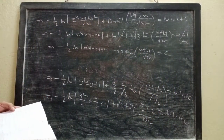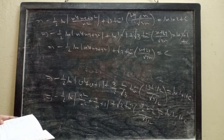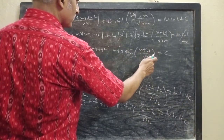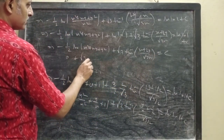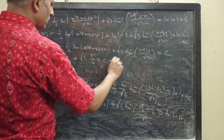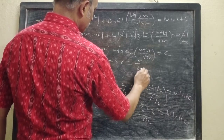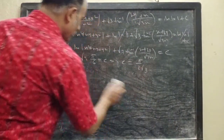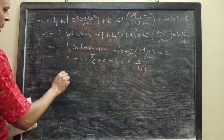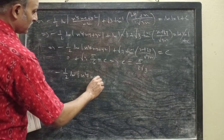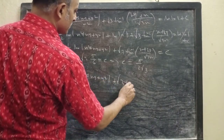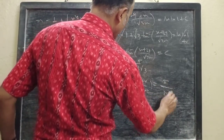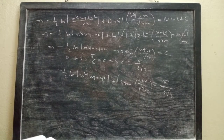Now applying the initial condition y(1) equals 0: when x equals 1 and y equals 0, we get 0 plus √3·tan⁻¹(1/√3), which means π/6, equals c. So c equals π/(2√3). Hence the particular solution is: minus half·ln|x² plus xy plus y²| plus √3·tan⁻¹((x plus 2y)/(√3·x)) equals π/(2√3).